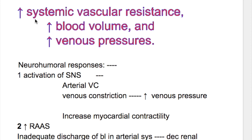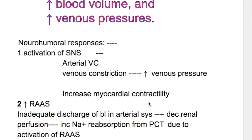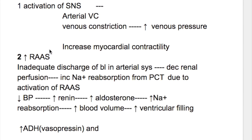The increase in systemic vascular resistance is a neurohormonal response. There is activation of the sympathetic nervous system that leads to arterial and venous constriction. Venous constriction leads to increase in venous pressure and also causes increased myocardial contractility.